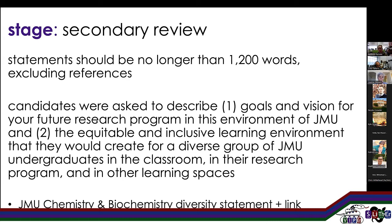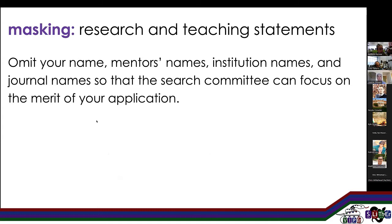We asked our candidates to describe their goals and vision for their future research program at the JMU environment and how they would create an equitable and inclusive learning environment for students in class, lab, and in other learning spaces. We sent our diversity statement and a link to our diversity plan and where we are in implementing it. We also gave them specific instructions on how to mask: we asked them to omit their name, their mentor names, institution names, and journal names, because we wanted to focus on the science. We gave them examples based very much on what Yale MB&B did.